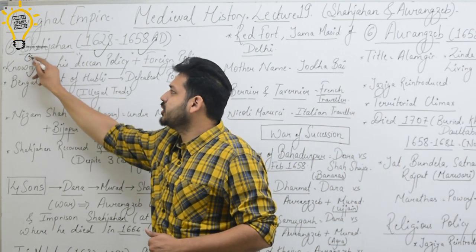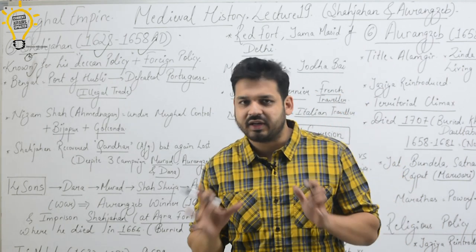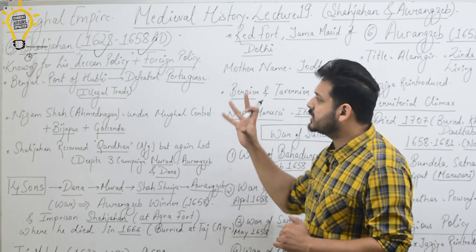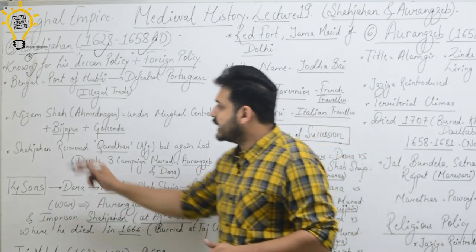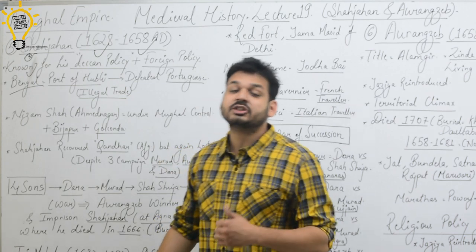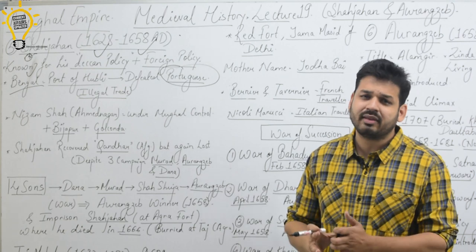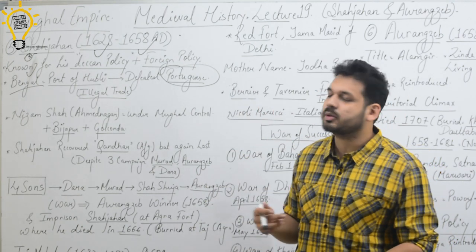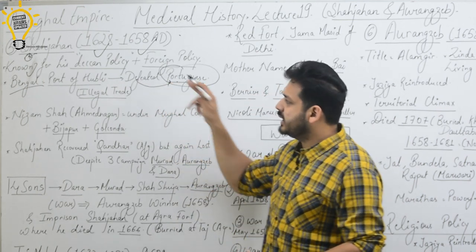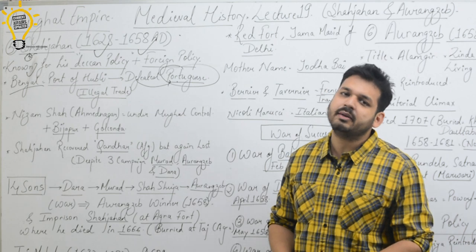Shah Jahan was very famous for his Deccan policy and foreign policies. In Bengal there was a port, the port of Hubli. Here the Portuguese were defeated because the Portuguese were illegally participating in trade. Shah Jahan defeated the Portuguese at the port of Hubli in Bengal.